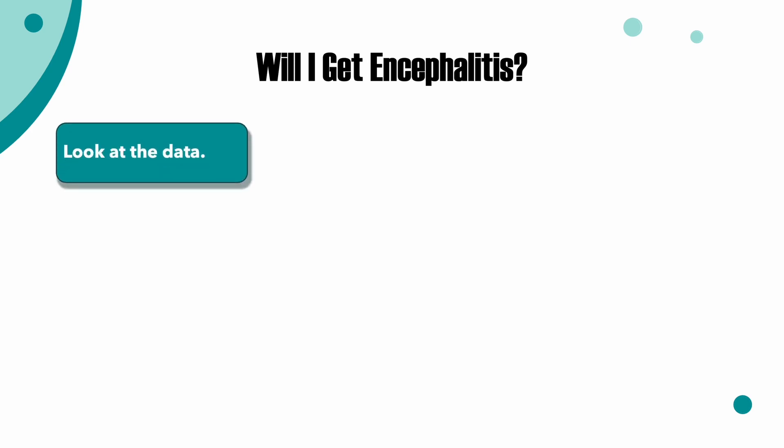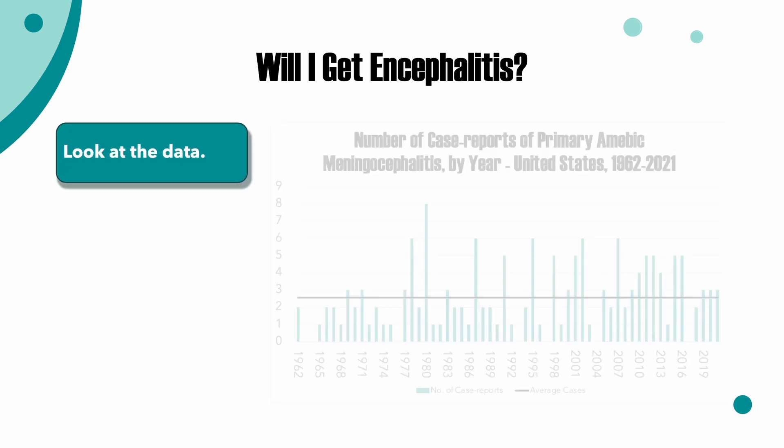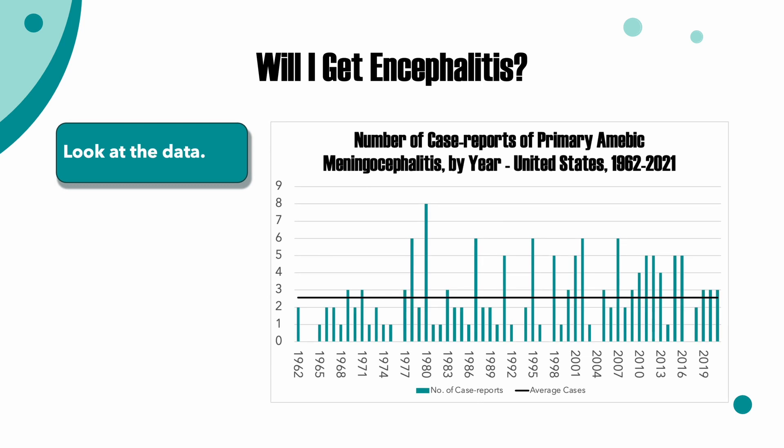Well, firstly, she could have looked up the number of people that are infected with this amoeba, which according to data from the CDC is on average 2.55 per year. As a comparison, the website Trip Savvy notes that between 2007 and 2016, the average annual deaths from whitewater rafting was around 53. So my wife probably should have been more worried about the rafting than the bugs in the water.